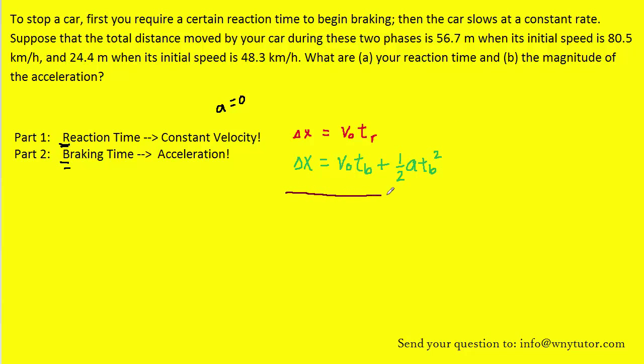The total displacement during this motion can be obtained simply by adding the two displacements of part one and part two of the question. So we're going to write an expression for the total displacement undergone by the car by simply adding these two displacements from part one and part two.